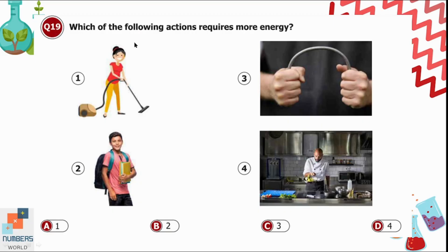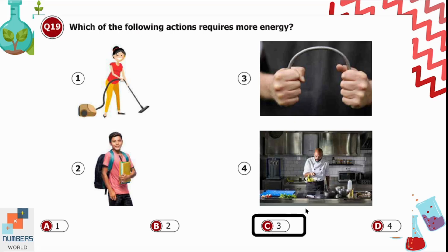Question 19: Which action requires the most energy? Option 1 is cleaning the floor. Option 2 is holding books or a bag. Option 3 is bending a rod. Option 4 is cooking food. We need more energy to bend a steel rod, so option 3 is correct.